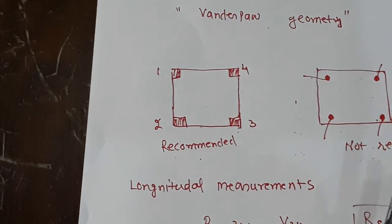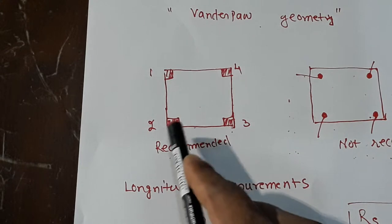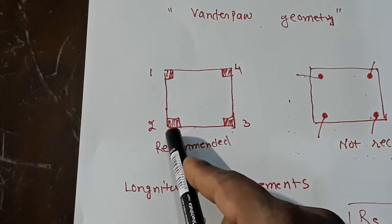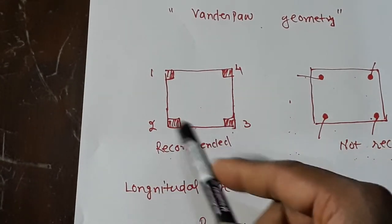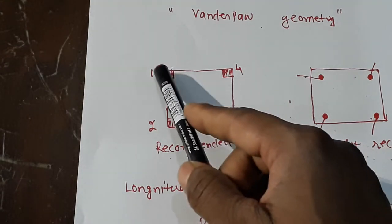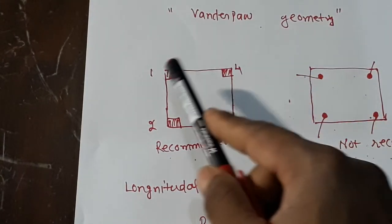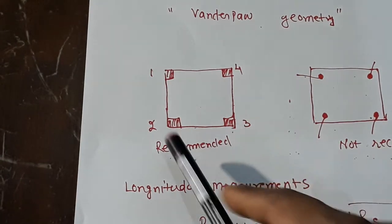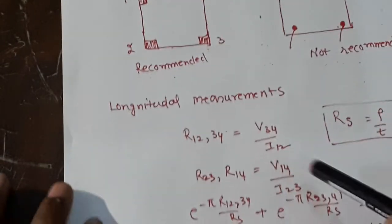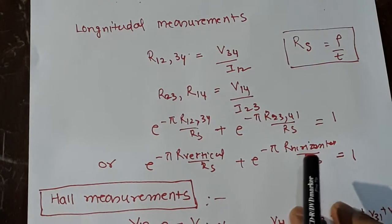This is one measurement. It's a tricky measurement, so you need to do it twice. In the second case, you have to do both measurements - horizontal and vertical. You pass current here and measure voltage here, you pass current there and measure voltage there.